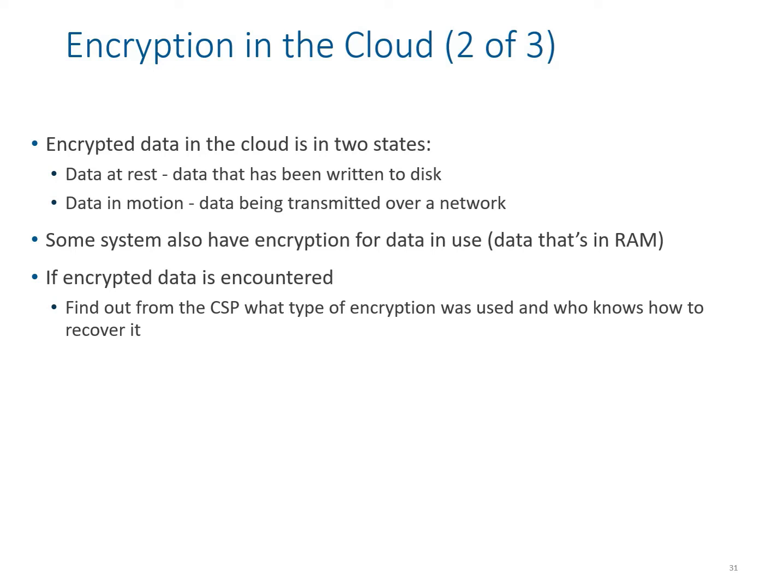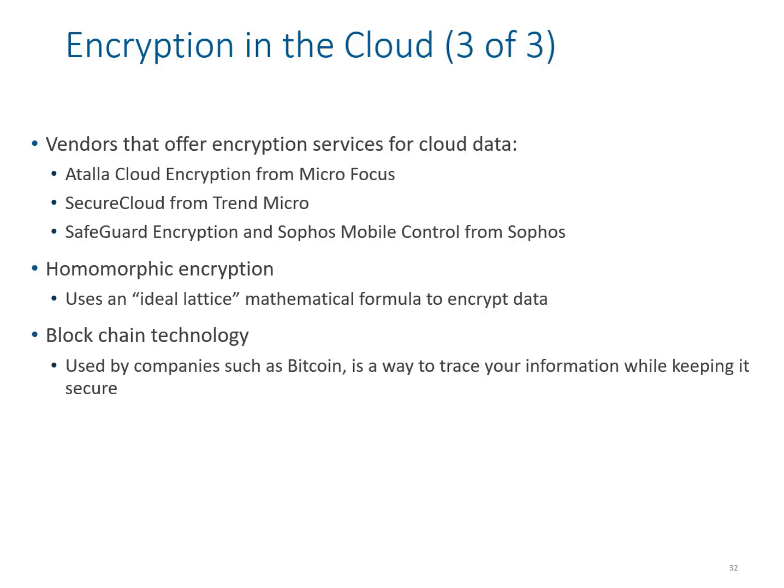Encrypted data in the cloud has two states: data at rest (written to disk) and data in motion (transmitted over the network). Some systems also encrypt data in RAM. When encountering encrypted data, first find out from the cloud service provider what kind of encryption is used and who knows how to recover it. Vendors offering cloud encryption services include Italic Cloud Encryption, Secure Cloud, and Safeguard Encryption.